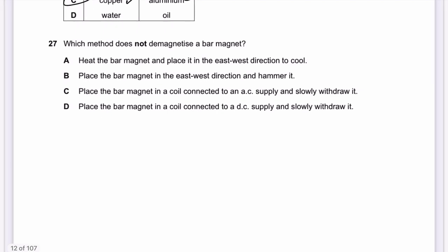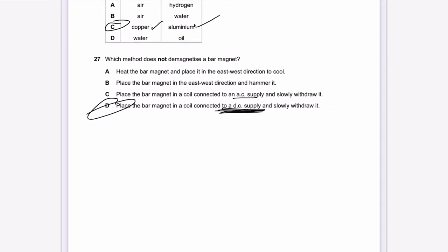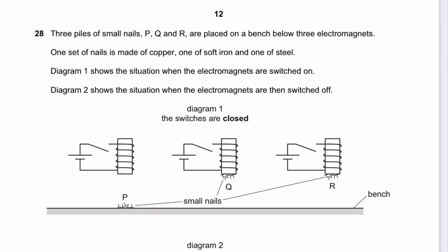Question 27: Which method does NOT demagnetize a bar magnet? Option A (heat and place east-west to cool) — demagnetizes. Option B (place east-west and hammer) — demagnetizes. Option C (place in a coil connected to AC supply) — demagnetizes. Option D (place in a coil connected to DC supply) — this actually magnetizes it, not demagnetizes. The answer is D.